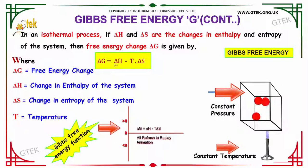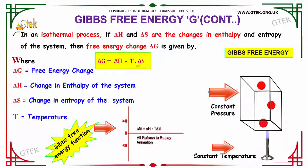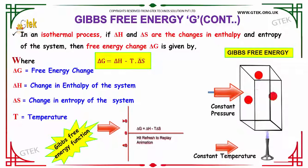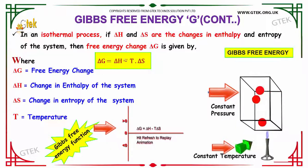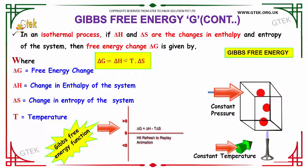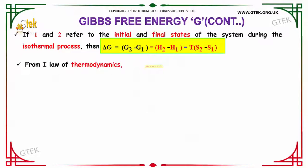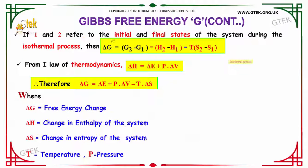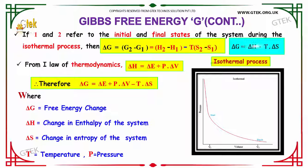Delta H is the change in enthalpy of the system and delta S is the change in entropy of the system. If we refer to the initial and final state of the system during the isothermal process, delta G equals G2 minus G1, which equals H2 minus H1 minus T times S2 minus S1.